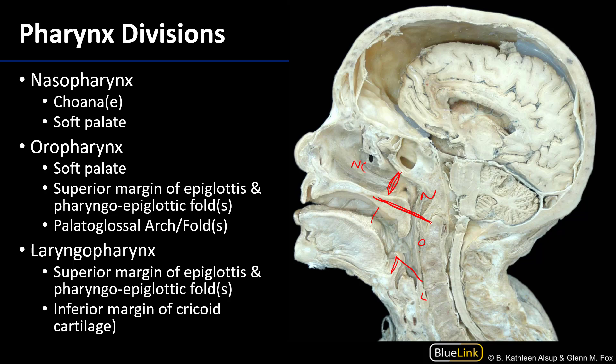The oropharynx also has an anterior barrier of the palatoglossal folds, which we can see right there. The palatoglossal fold is a fold of mucosa that goes over the palatoglossal muscle, one of the extrinsic muscles of the tongue. Together, those palatoglossal folds form the palatoglossal arch, and the space between those arches is the isthmus — the space between the oral cavity and the oropharynx.